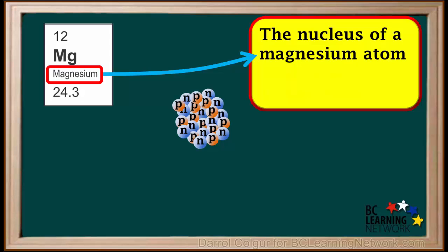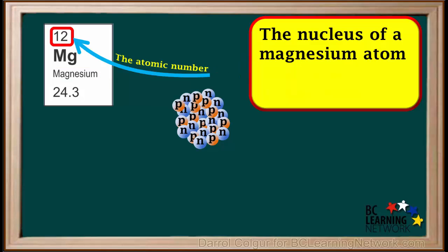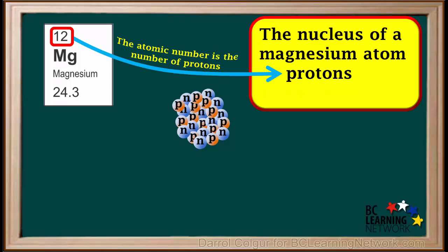The box for magnesium on the periodic table is shown on the left of the video here. The atomic number is located on top of the element's symbol on the periodic table. For magnesium, the atomic number is 12. The atomic number tells us the number of protons in the nucleus of an element's atom. So a nucleus of magnesium has 12 protons.